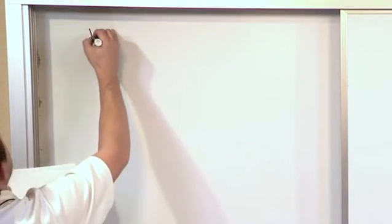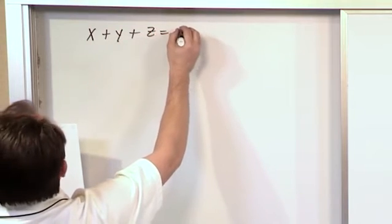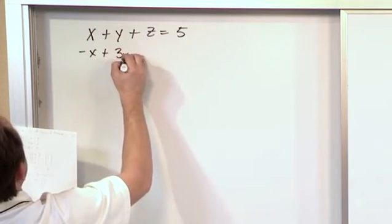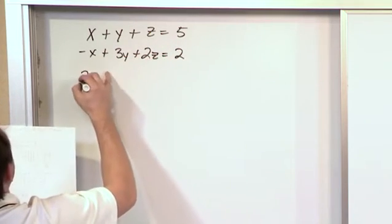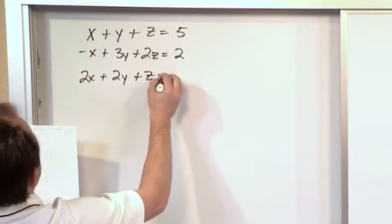So let's go and take a look at the system of equations: x plus y plus z is equal to 5, negative x plus 3y plus 2z is equal to 2, 2x plus 2y plus z is equal to 1.